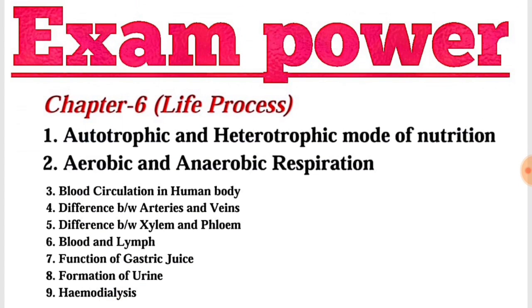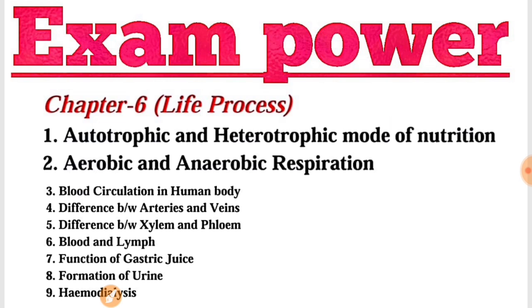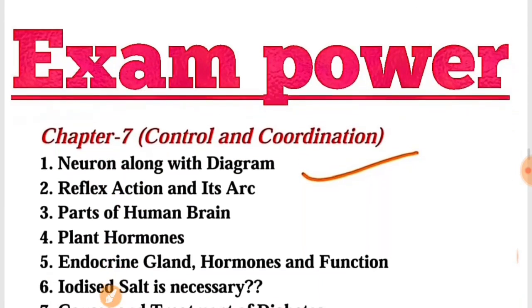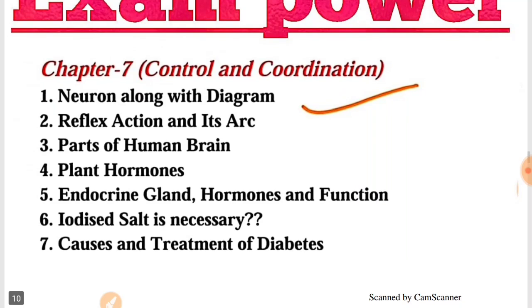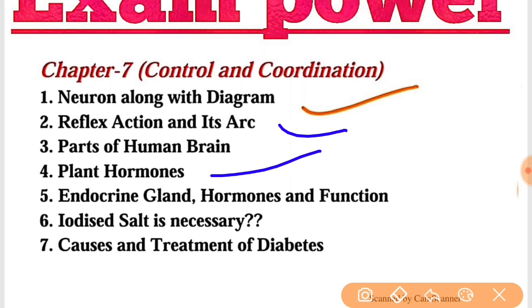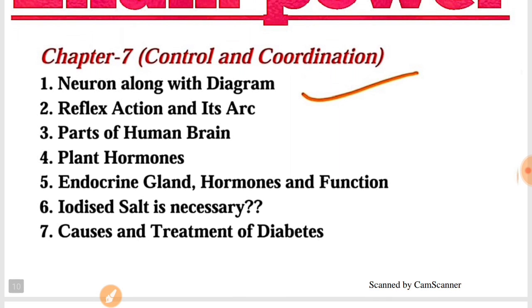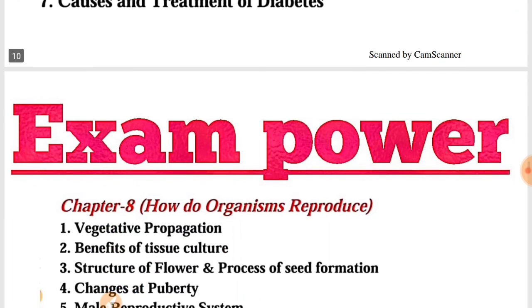Chapter Number 6 और 7 के important topics screen पर आ चुके हैं, तो आप note down कर लीजिए या screenshot ले लीजिए। Chapter Number 7 — Control and Coordination। इसमें से Reflex Action and its Arc, Plant Hormones, और causes and treatment of Diabetes — इनमें से question पूछे जा सकते हैं। इन पर ज़्यादा focus कीजिए ताकि अच्छे marks आएं।